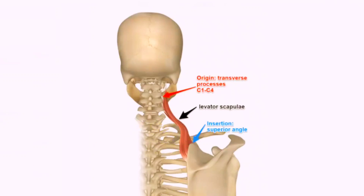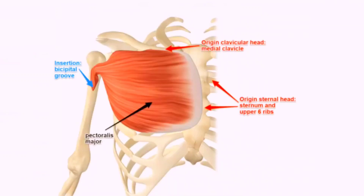The next muscle is pectoralis major, also called the chest muscle because most compartments of the chest are associated with it. The origin is on the mid-clavicular line from the sternal head, and overall this is the pectoralis major.